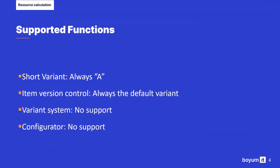The following functions are supported by resource calculation: the short variant, and the used variant is always variant A. The variant system in the work order and the product configurator are not supported.